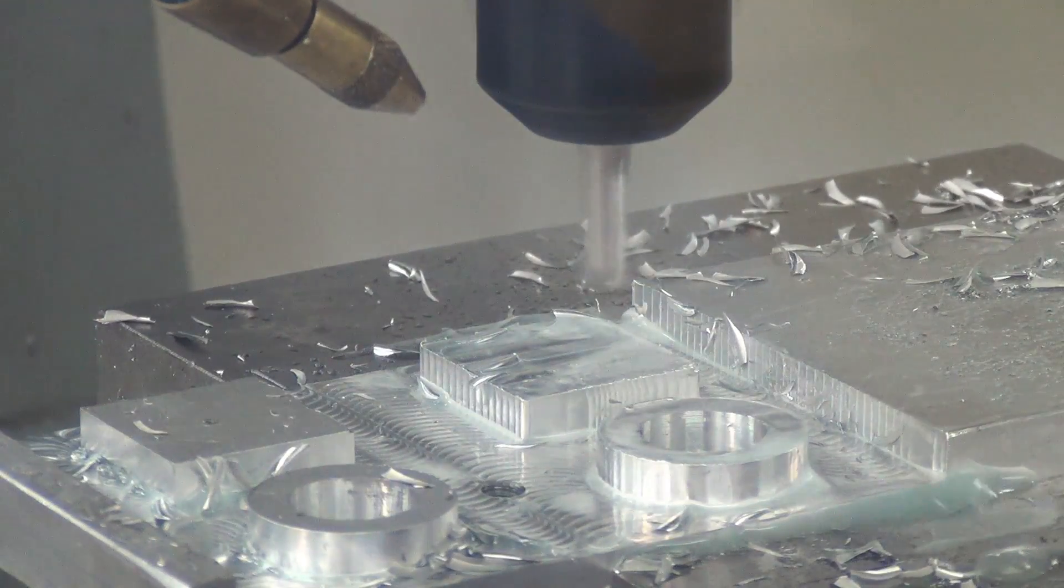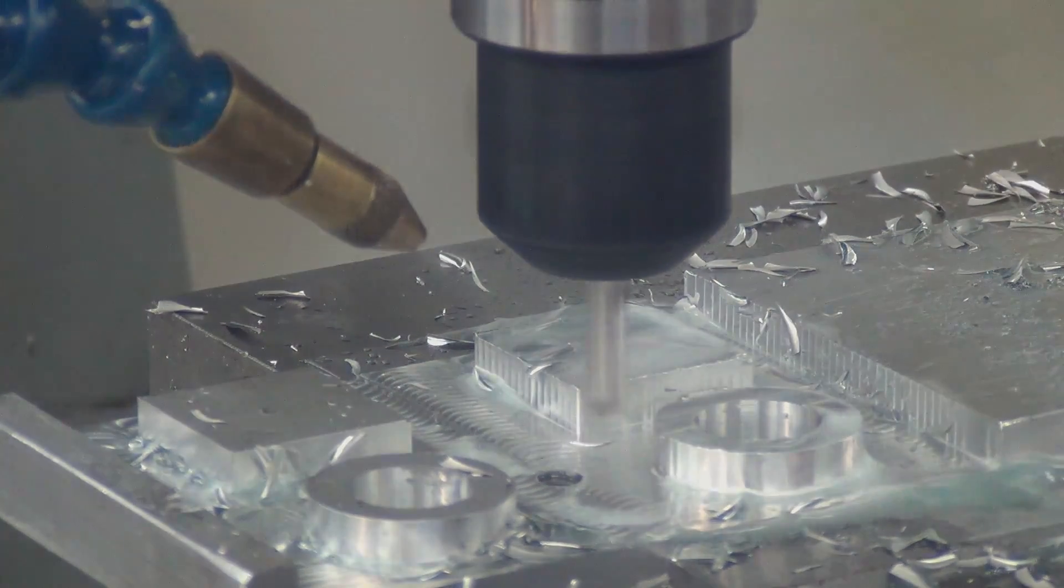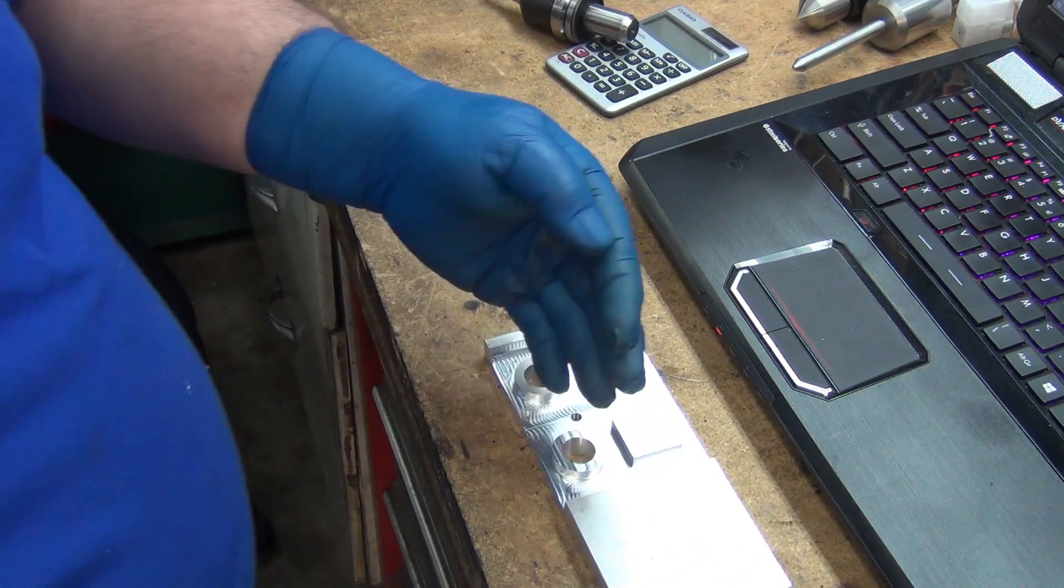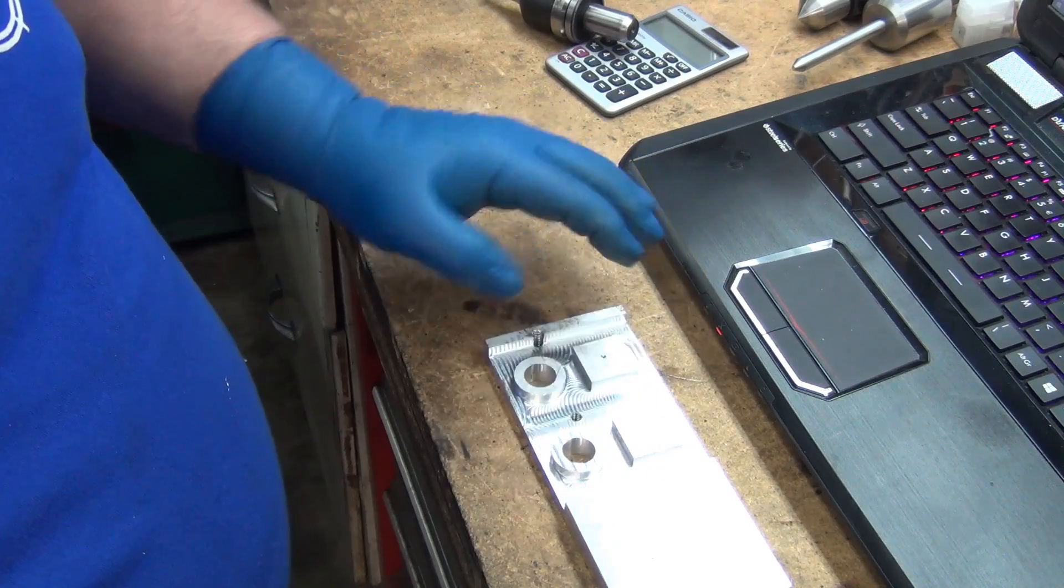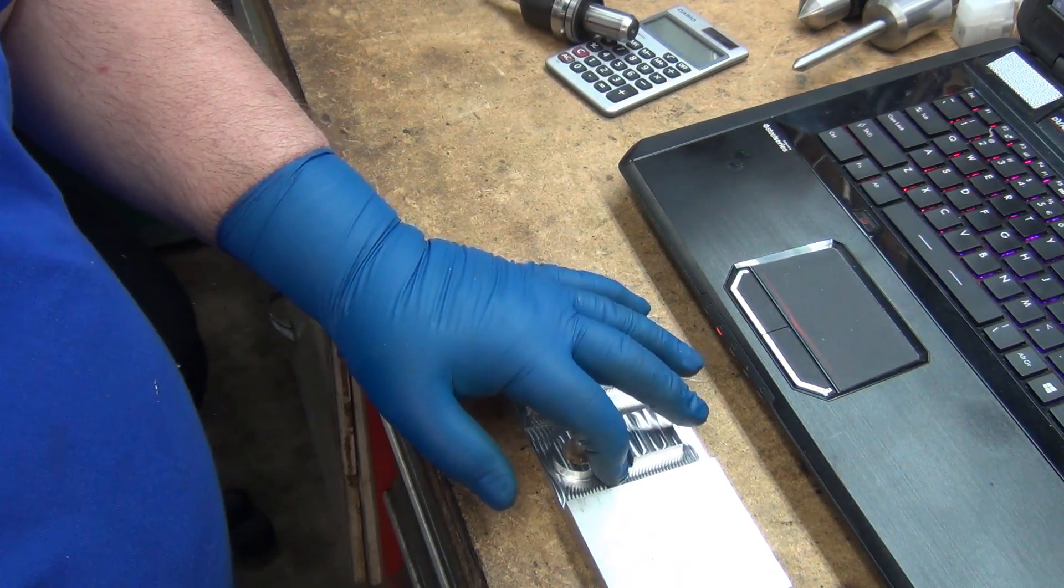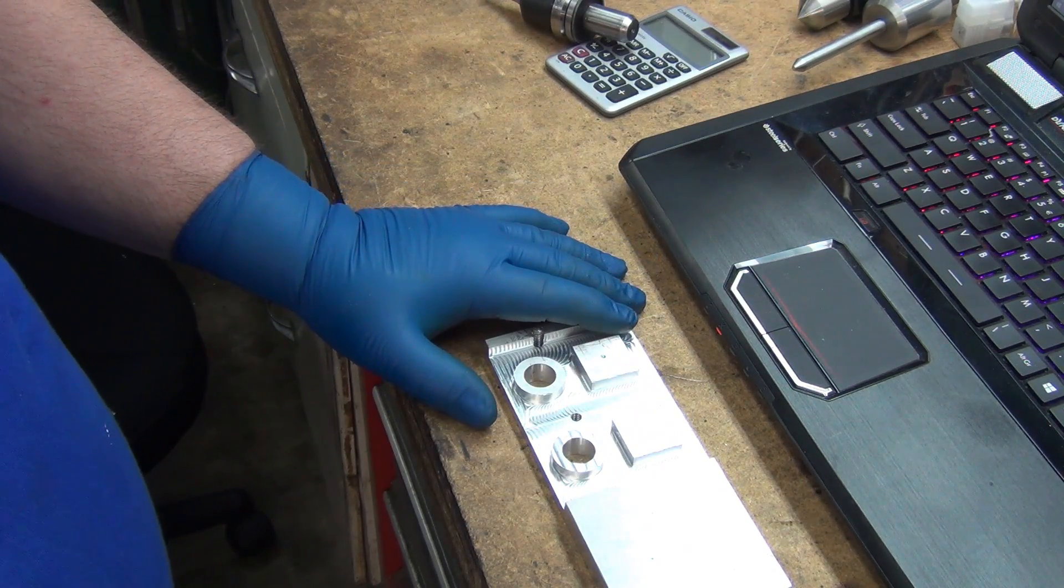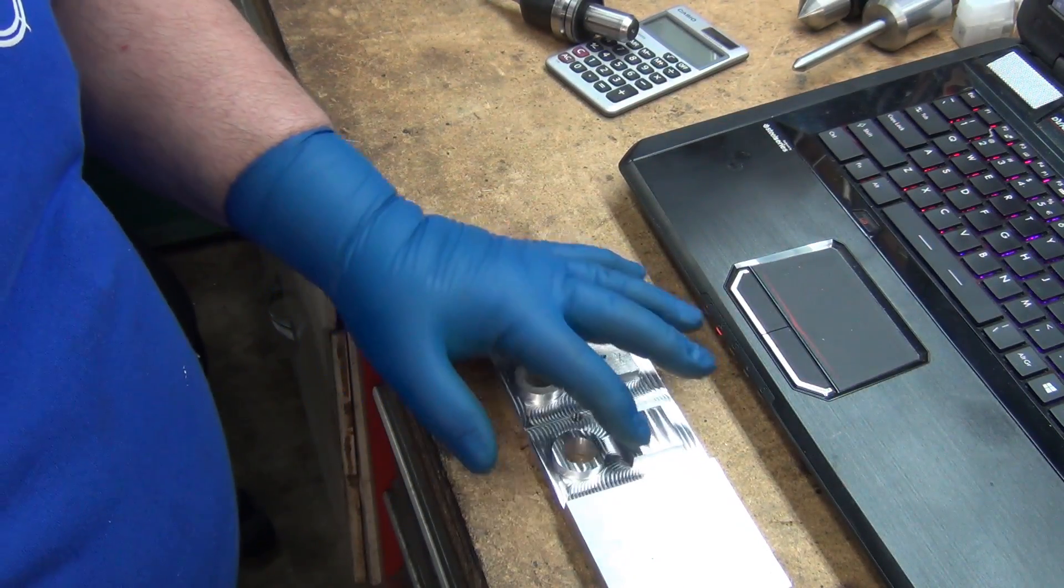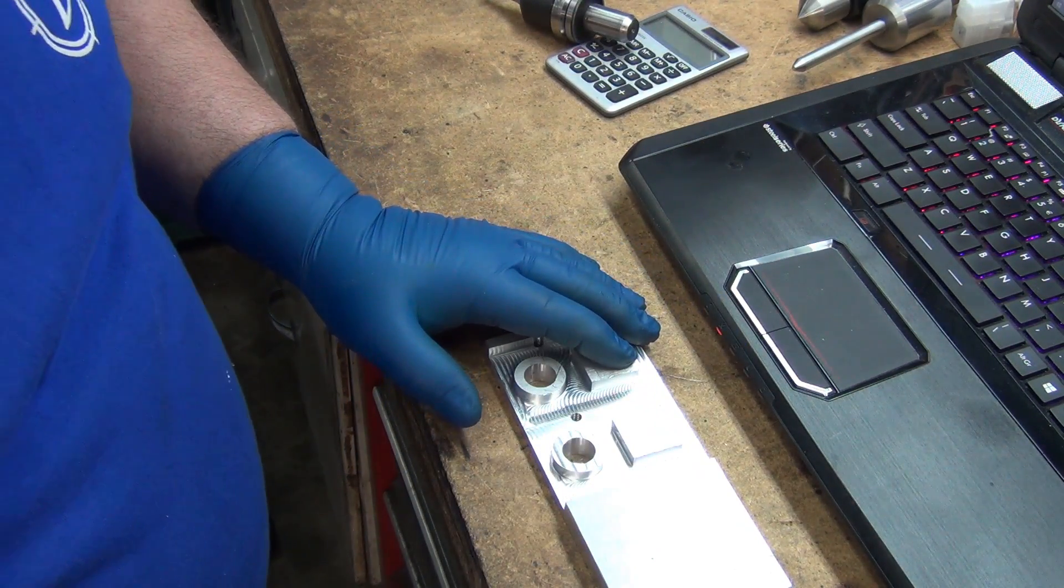It's just a two flute cutter, just a cheap Chinese one. You can feel that ripple - I'm wondering if it's from tool flex, you know, because I know the tram's a whole lot closer than that. And it's always on the same part of the cut.